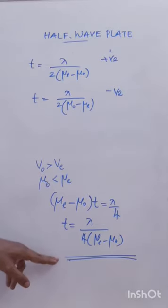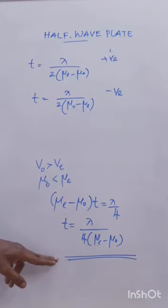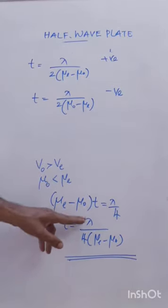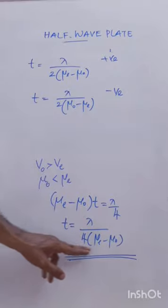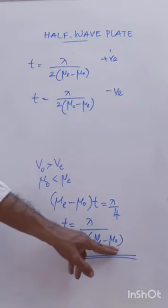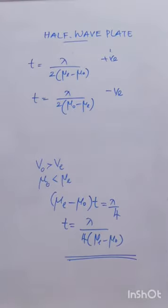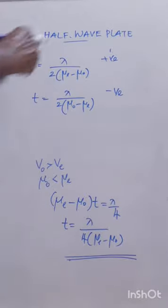You can write a similar equation for the thickness of the half wave plate: t = lambda / [2(mu_e - mu_o)] for a positive crystal, and t = lambda / [2(mu_o - mu_e)] for a negative crystal. These are two important equations to find the thickness of a quarter wave plate and the thickness of a half wave plate, and these will be asked for problem-solving.